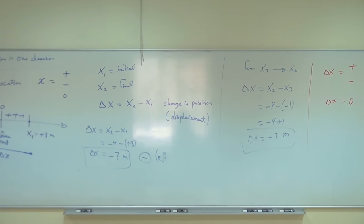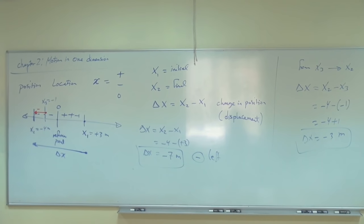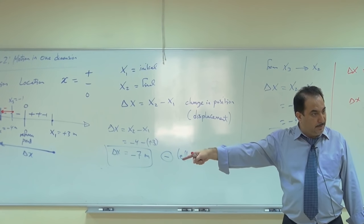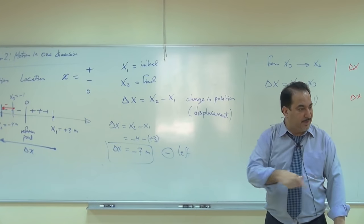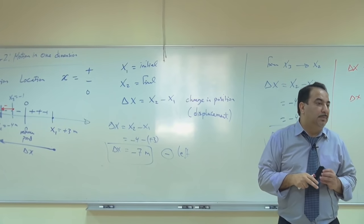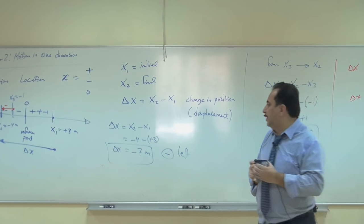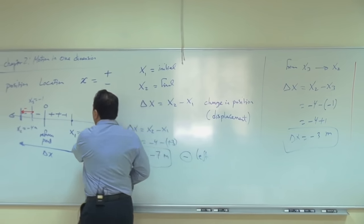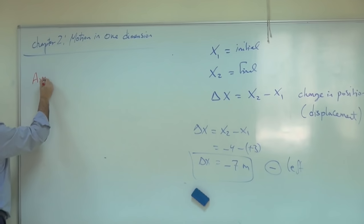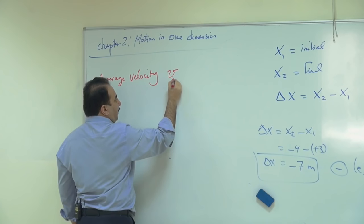Now the story about position and displacement. When I change my position from x1 at time t1 to x2 at time t2, the displacement is delta x. If I divide the displacement over the time taken, this gives me what is called average velocity — not speed. Average velocity is displacement divided by time.